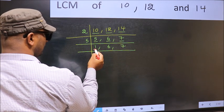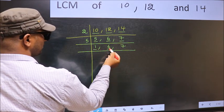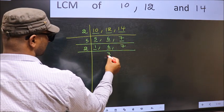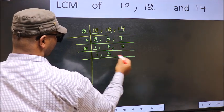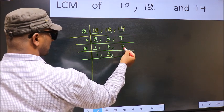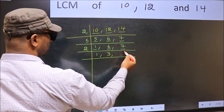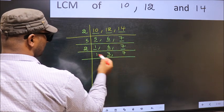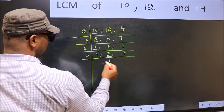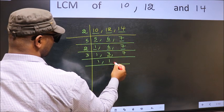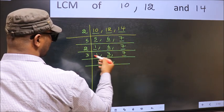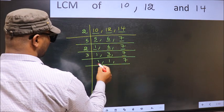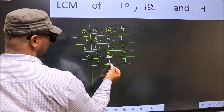Now we got 1 here. So focus on the other number 6. 6 is 2 3s, 6. The other number 7, not divisible by 2, so you write it down as it is. Now we got 1 here and here.